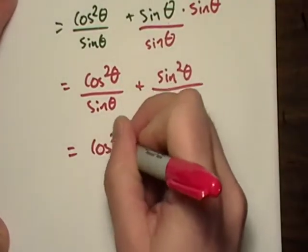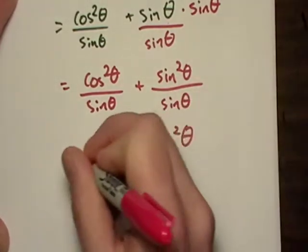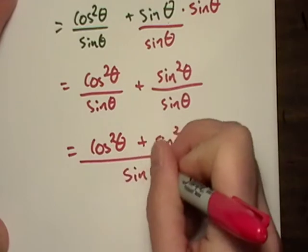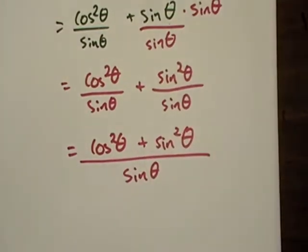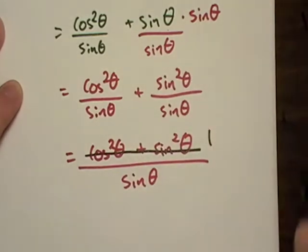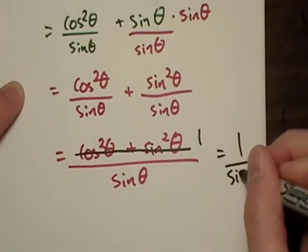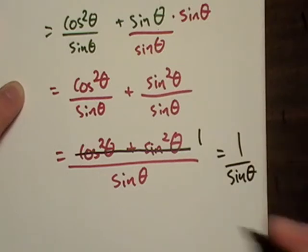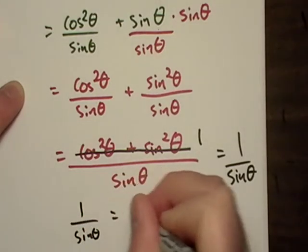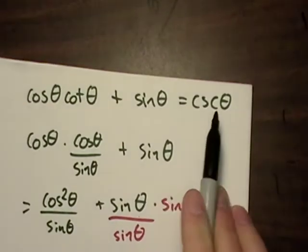That's cosine squared theta plus sine squared theta over sine theta. Now remember from Pythagoras and the Pythagorean identity that this whole thing right here is worth one, isn't it? So what did we end up with? Now we got one over sine theta, which one over sine theta we know is equal to cosecant theta, and that's what we wanted to get to.